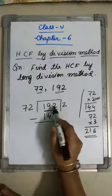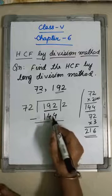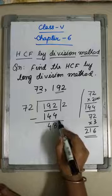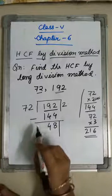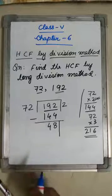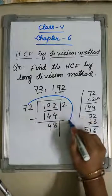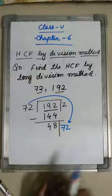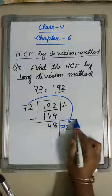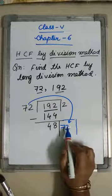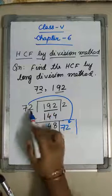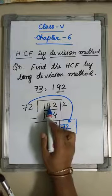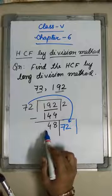Subtract the numbers. Borrow 1 — it is 12 minus 4 is 8, and 8 minus 4 is 4. So the remainder is 48. That is, 192 minus 144 equals 48.